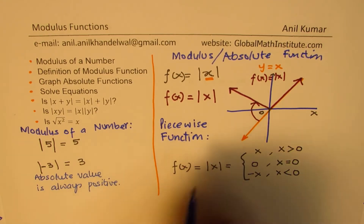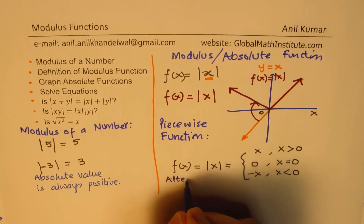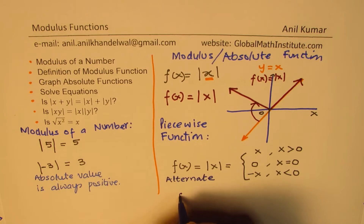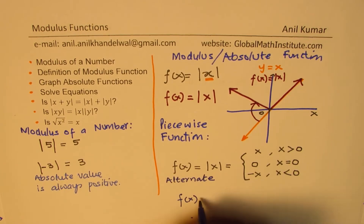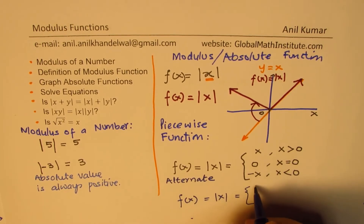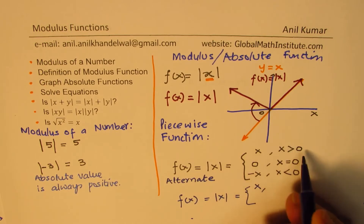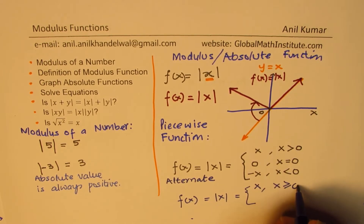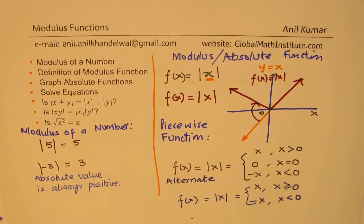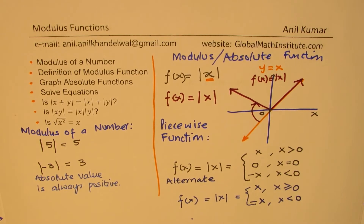Alternately, we can also write it with just two parts, which is normally utilized: absolute value of x equals x for x greater than or equal to zero, and negative x for x less than zero. Either way, you can write the absolute or modulus function in the form of a piecewise function.